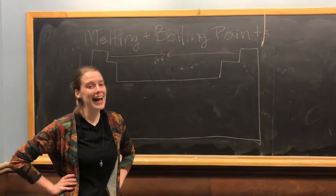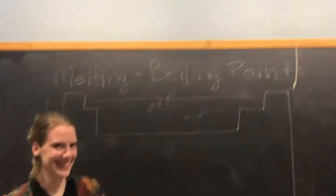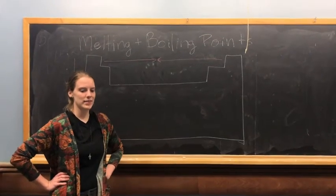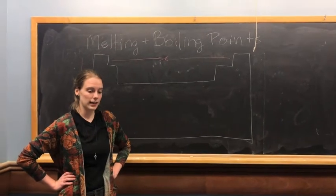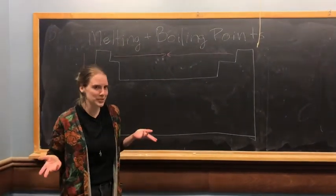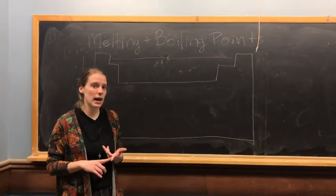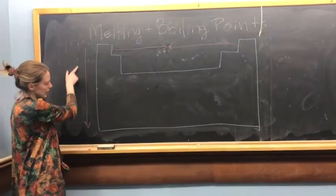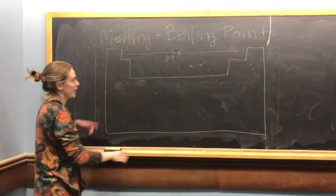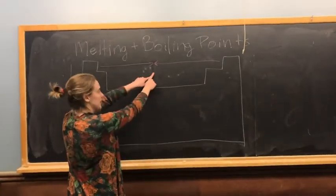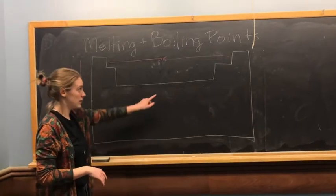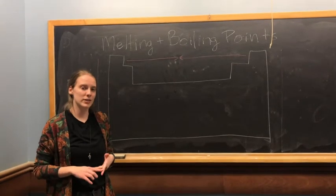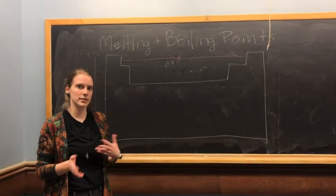Here's a hot trend: melting and boiling points. The melting point of a solid is the temperature at which it melts, and the boiling point is the temperature at which a liquid vaporizes. Both melting and boiling points increase going down the periodic table and toward the middle, because metals are good conductors of electricity and heat and therefore require higher temperatures to melt.